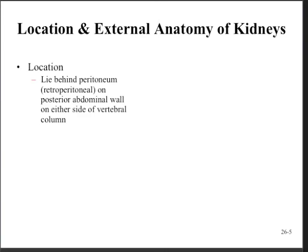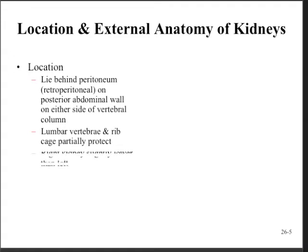They're located behind the peritoneum, so they're termed retroperitoneal organs on the posterior body wall on either side of the vertebral column. The lumbar vertebrae and the ribcage partially protect them, but that's not a lot of protection. The right kidney lies slightly lower than the left due to the presence of the liver on top of it.